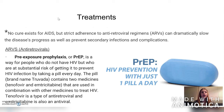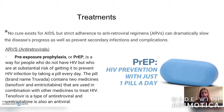There is no cure that exists for HIV or AIDS, but strict adherence to antiretroviral regimens — ARVs — can dramatically slow disease progress as well as prevent secondary infections and complications. One common ARV is pre-exposure prophylaxis, or PrEP — a way for people who do not have HIV but are at substantial risk to prevent HIV infection by taking a pill every day. The most commonly used brand is Truvada (Tenofovir/Emtricitabine), and these are used in combination with other medications to treat HIV.